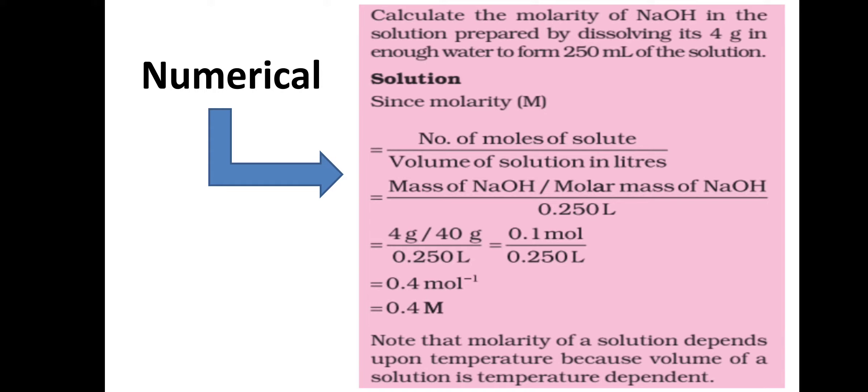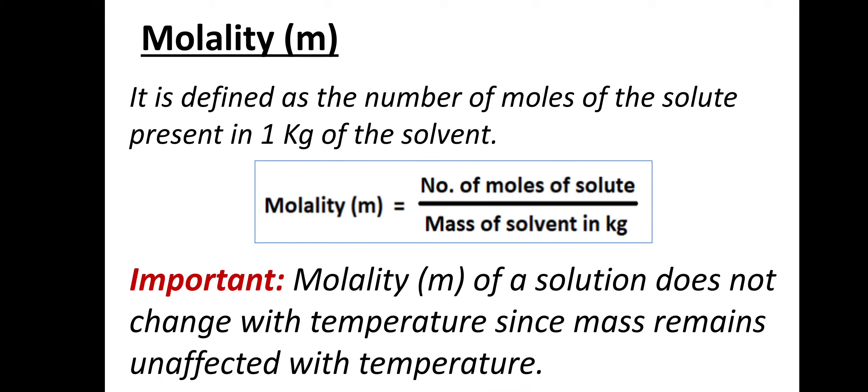An important point: molarity of a solution depends upon temperature because volume of a solution is temperature dependent. If you boil the solution, the volume decreases and the molarity increases because the amount of substance is fixed. Now, what is molality? Molality is represented by the symbol small m and is defined as the number of moles of solute present in one kilogram of the solvent.